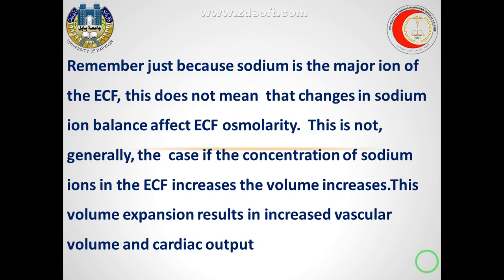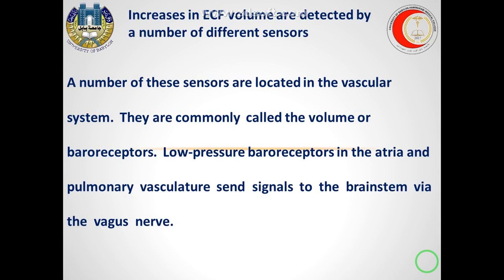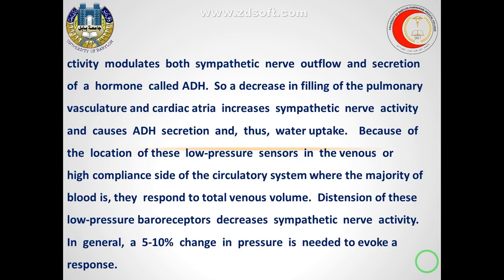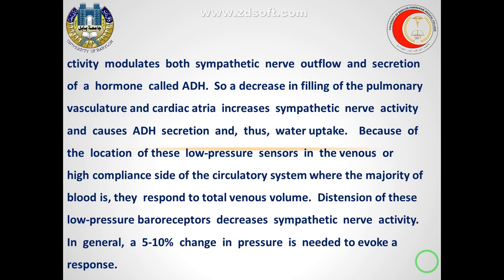This volume expansion results in increased vascular volume. A number of sensors are located in the vascular system, commonly called the volume receptors. Low pressure receptors in the atrial and pulmonary vasculature send signals to the brain stem via the vagus nerve, affecting sympathetic nerve outflow and secretion of antidiuretic hormone (ADH). Filling of the pulmonary vasculature and cardiac atria increases sympathetic nerve activity, which causes secretion of ADH and promotes water uptake.